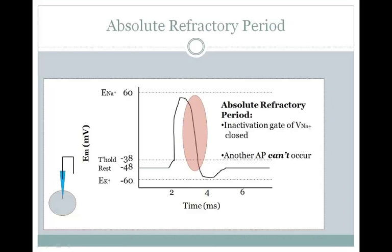The properties of these voltage-gated ion channels determine the two types of refractory period. The first is the absolute refractory period — the period of time where the inactivation gate of the voltage-gated sodium channel is closed. This is the millisecond or so after the peak of the action potential, where that inactivation gate is closed before it opens again following repolarization. During this time, another action potential cannot occur because no sodium ions can flow through the voltage-gated sodium channels, so you can't have depolarization towards the sodium equilibrium potential. This ensures you get discrete action potentials rather than having them blur together.